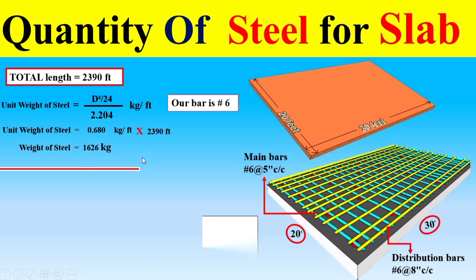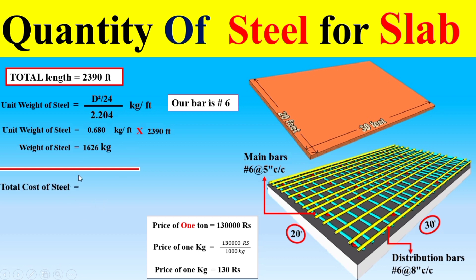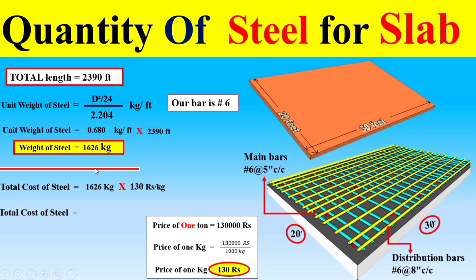Now dear students, if we want to find the cost, we know that the current market rate for one ton of steel is 130,000 rupees. To find the price per kg, we divide this value by 1000. Then, to find the total cost of 1626 kg of steel, we multiply 1626 by the price per kg.